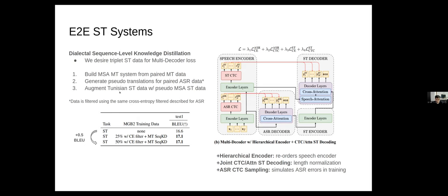Then we augment the Tunisian ST triplet data with these pseudo MSA triplet data. One note here is that we use the same cross-entropy filtering described for ASR to filter down the ASR data which is pseudo-translated. You can see here that using this additional MSA data gives a 0.5 BLEU improvement over using simply the Tunisian data by itself.